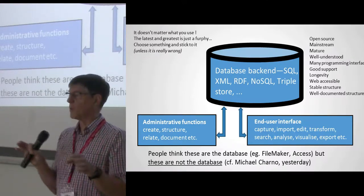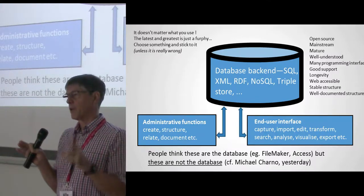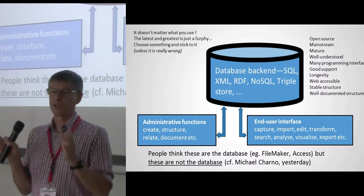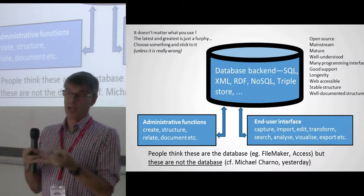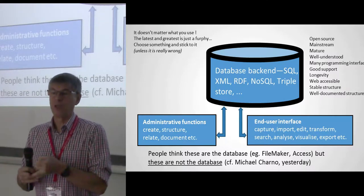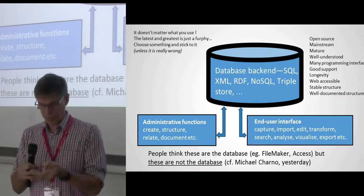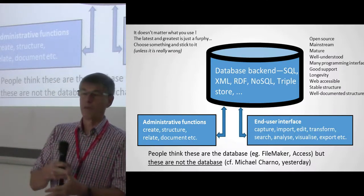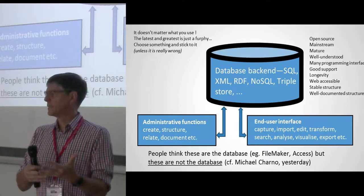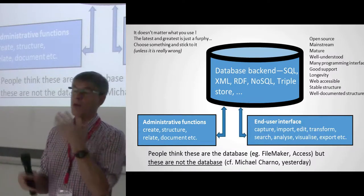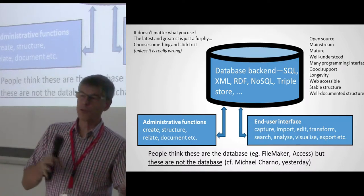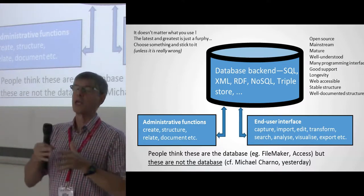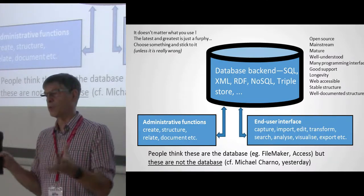The interesting thing about Heurist is there are only six tables that matter — tables that contain data. There's a records table containing all records by entities; a details table containing all fields for all records, tied by foreign key to the records table; a record type table; a detail type table; a field structure table defining what fields are required for each entity; and a terms definition table. All the rest is about users, ownership, permissions, and caching to improve performance. There's also a file store table referencing all files uploaded or imported into the system.